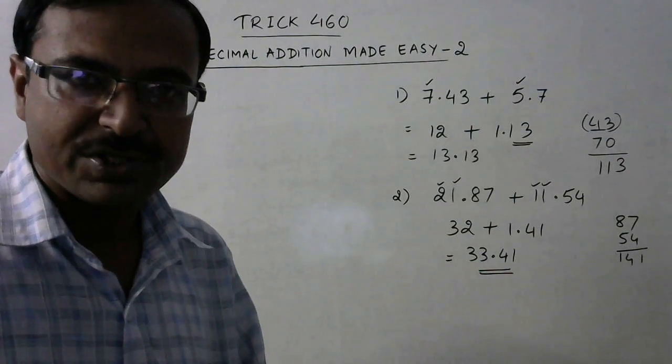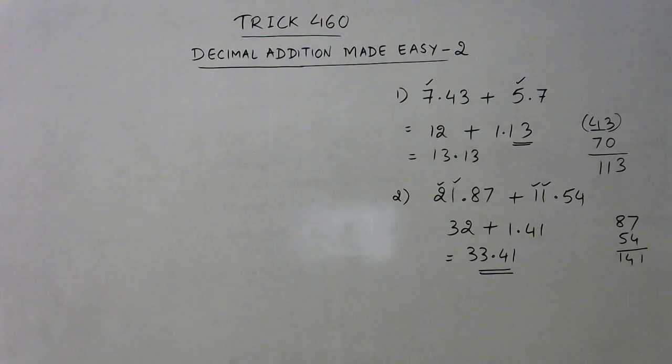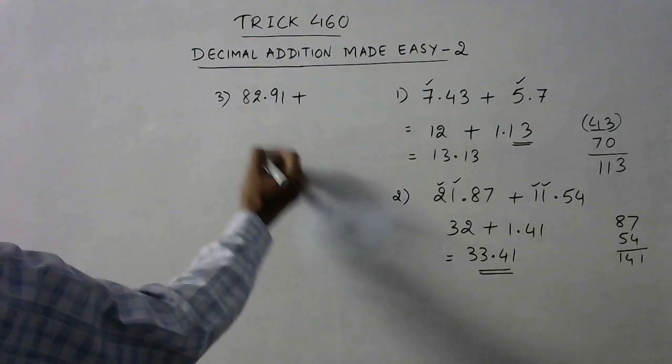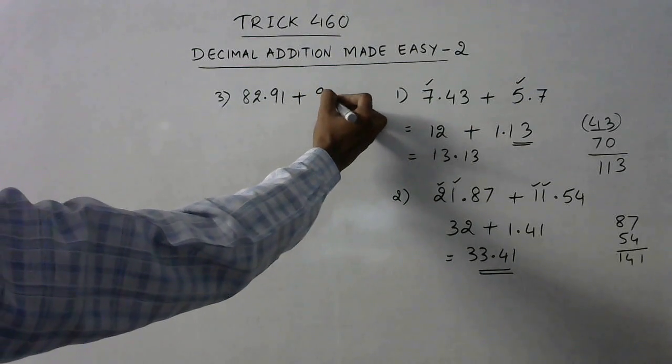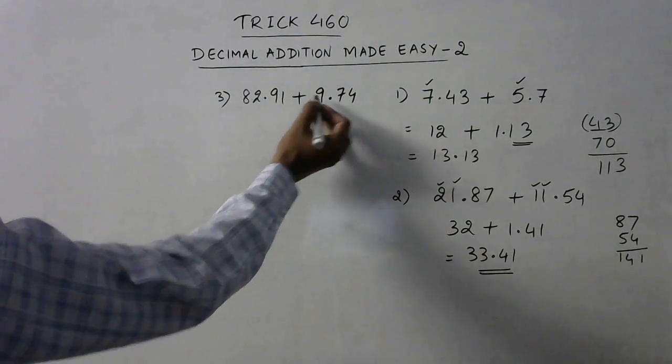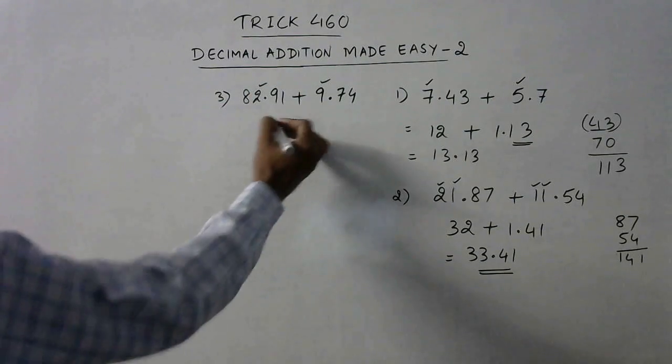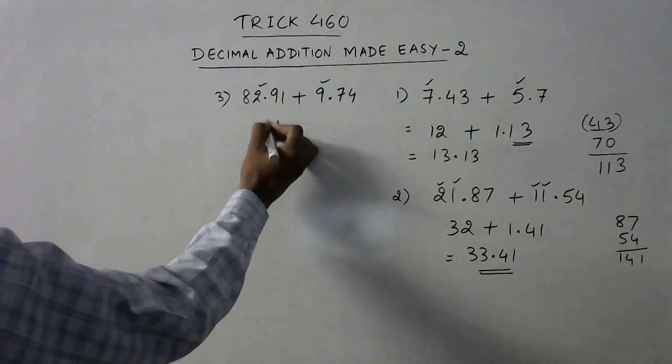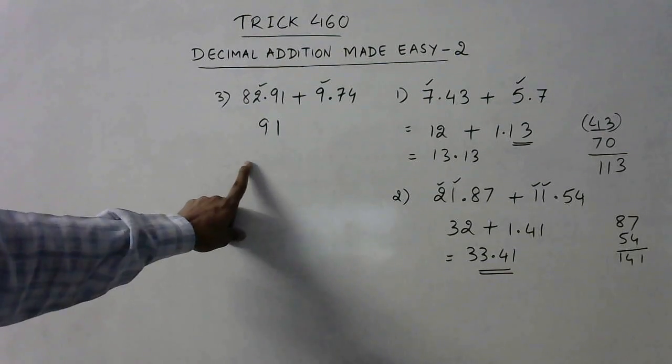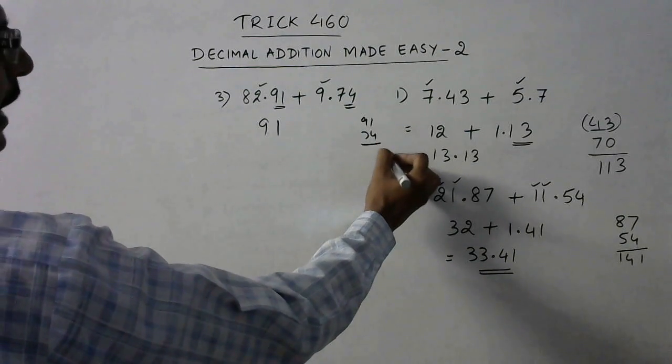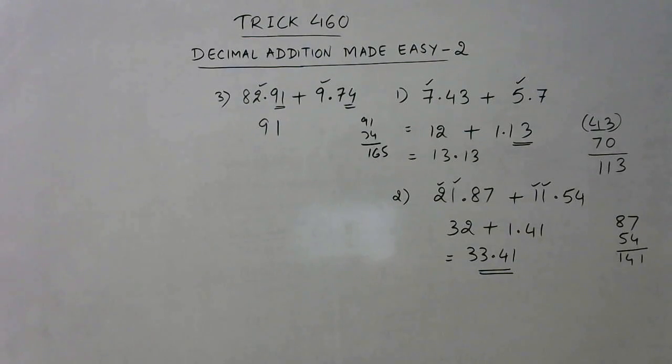Now let's take some more examples. Say we have this time 82.91 and we need it to be added to 9.74. Now again, the number of digits is same, so add these. So 9 plus 2 is 11, one carry, and we have only a single digit here because no digit at tens place here, so 8 plus 1 is 9. So 82 plus 9 is 91. And now this 91 and this 74, write it one below the other and add them, we get 165, but we will write it as 1.65. So very easy, 92.65 is the sum.